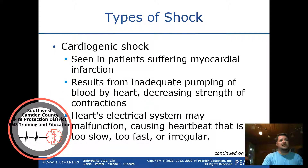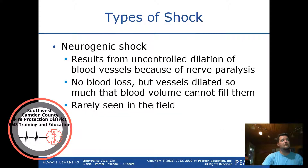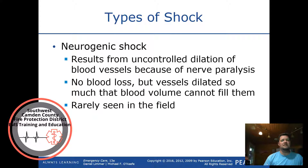Cardiogenic shock is seen in patients suffering an MI — it results from the inadequate pumping of blood by the heart and decreased strength of contractions. The heart's electrical system may malfunction, causing the heartbeat to go too slow, too fast, or irregular — this is a pump problem. Neurogenic shock results from uncontrolled dilation of blood vessels due to nerve paralysis. There is no blood loss, but vessels dilate so they cannot fill with blood. It is rarely seen in the field and takes time to develop — neurogenic shock is a container problem.